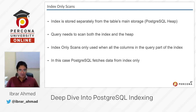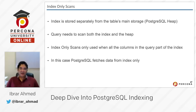To understand why, consider the analogy of a book index at the end of a book. We go to the index, read the word and the page number, then go to that page in the book to find the word. Similarly, we read the index, get the pointer from it, then go to the heap to get the real data.